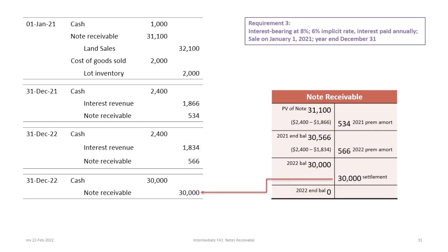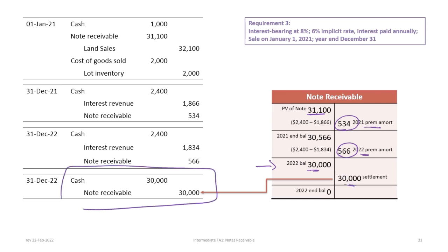When we calculate the balance in notes receivable: starting with $31,100, $534 premium amortization in 2021, then $566 in 2022, gives an ending balance of $30,000, which we now settle. There is a debit to cash for the amount received from the purchaser and a $30,000 credit to wipe out the notes receivable account, and we're finished.